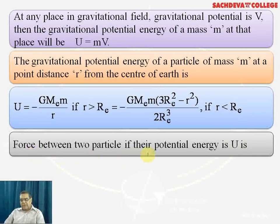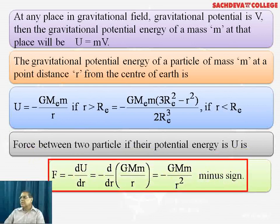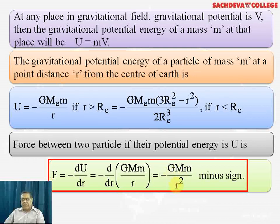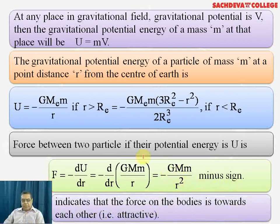The force between two particles, given their potential energy U, is found by F = -dU/dr. Taking the derivative of U = -GMm/r with respect to r, we get F = -GMm/r². The negative sign indicates that the force on the bodies is directed towards each other — that is, it is attractive. Gravitational force is never repulsive; it is fundamentally an attractive force.